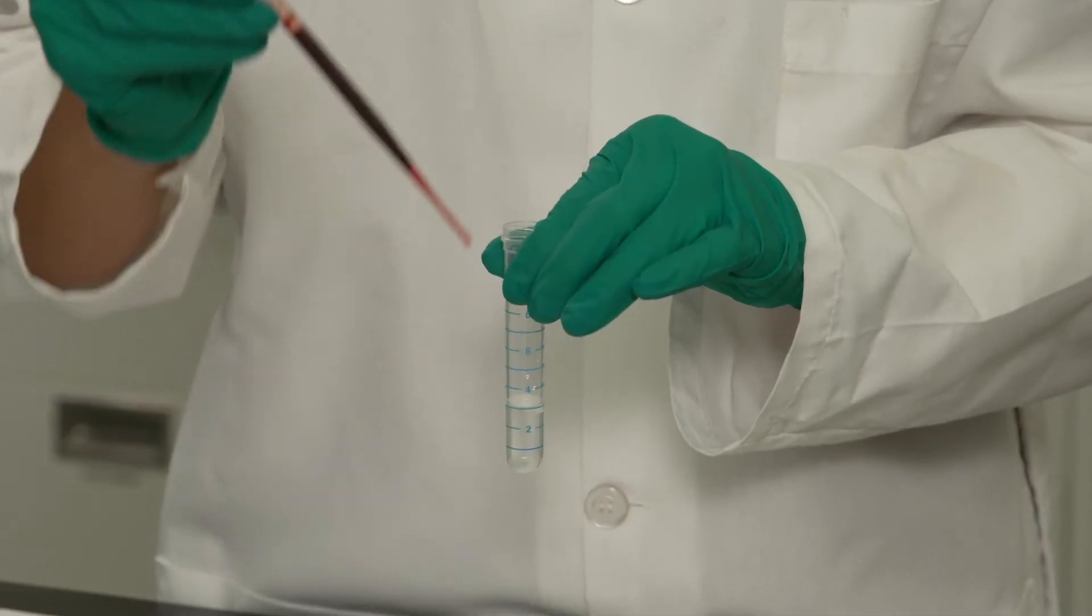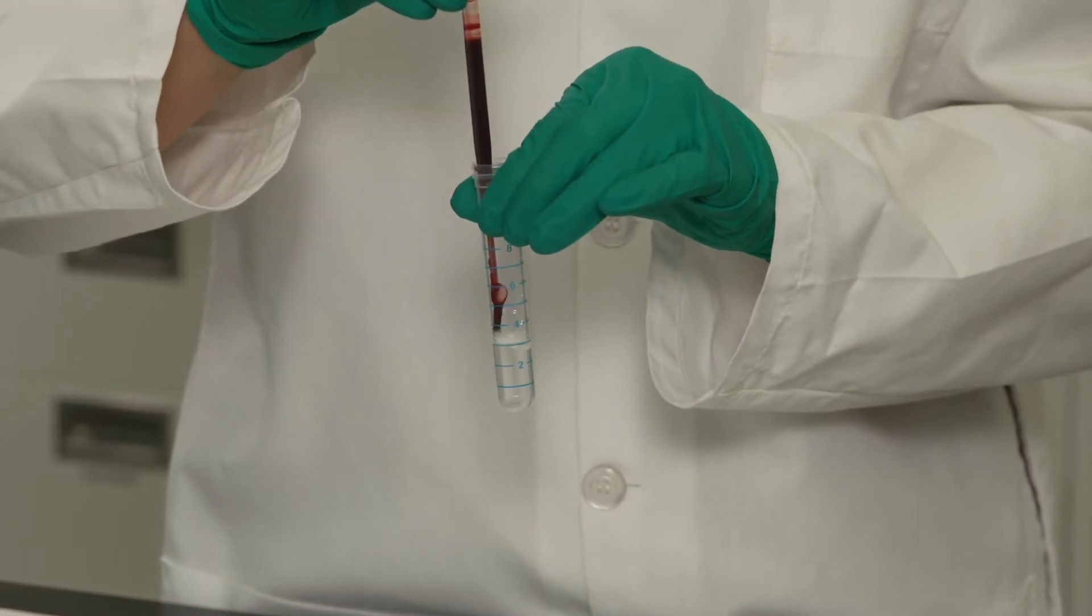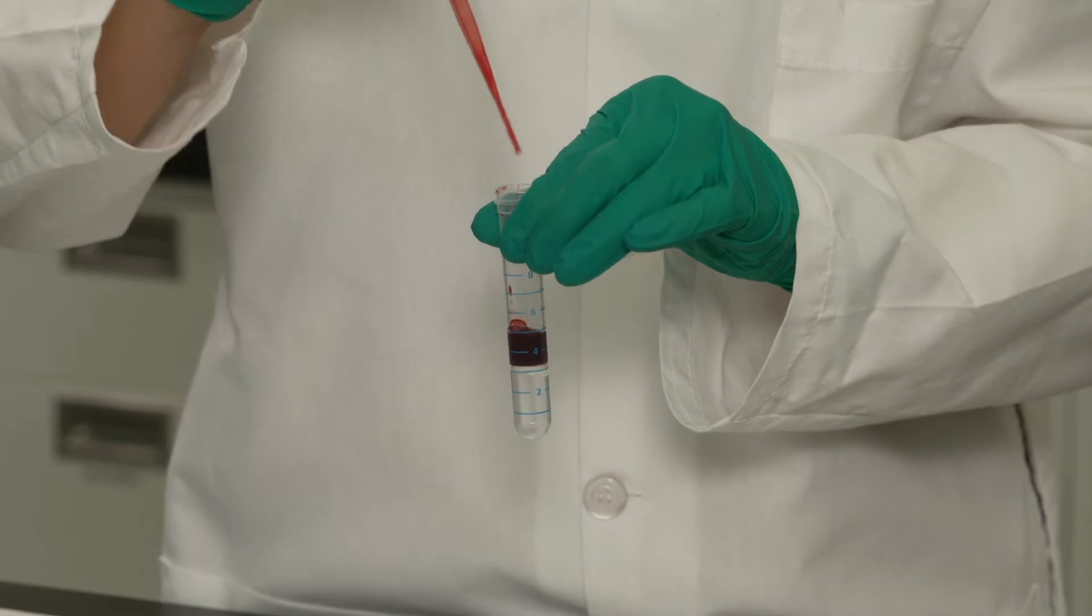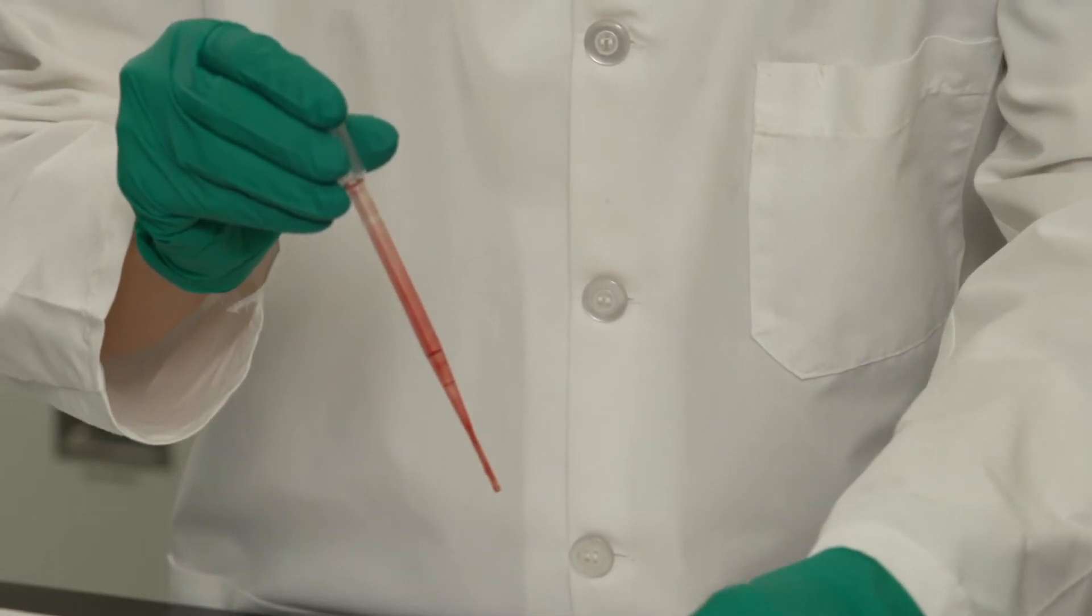Then, add the blood sample to each AccuSpin tube, pouring three to six milliliters of fresh, anticoagulated whole blood into the upper chamber of each tube.